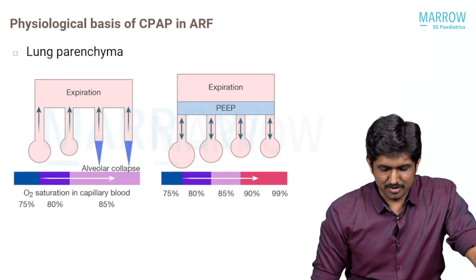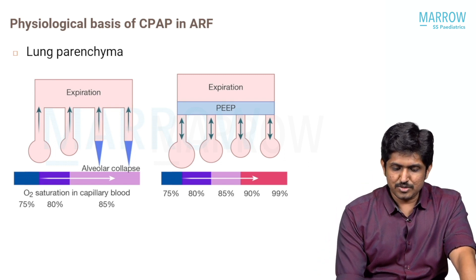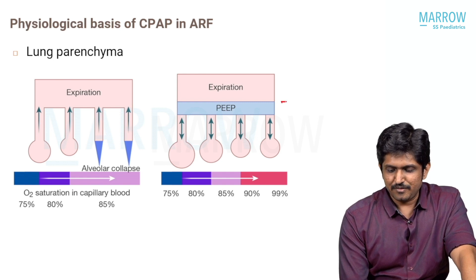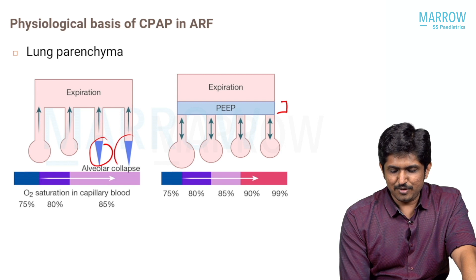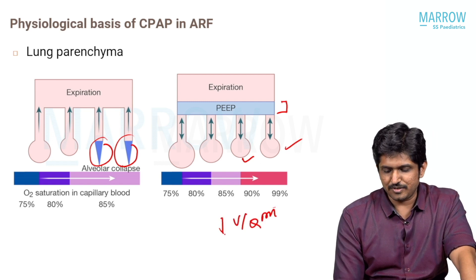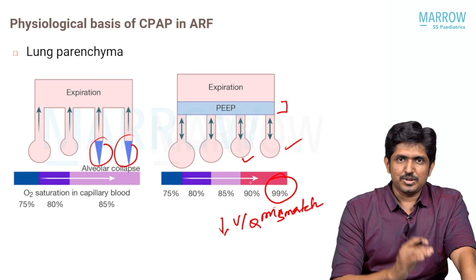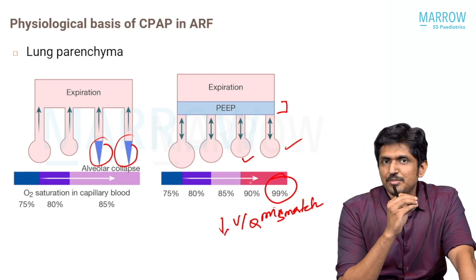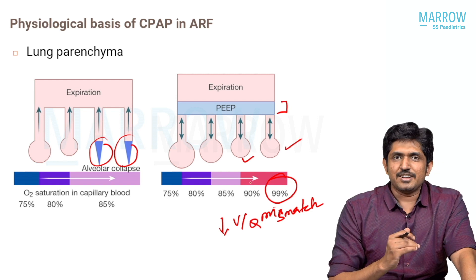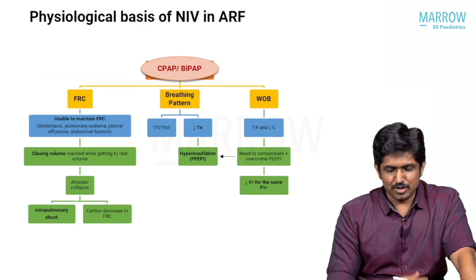What does HFNC do to the lung parenchyma? Unlike NIV CPAP and NIV BiPAP, which deliver alveolar pressure via PEEP during expiration to open collapsed alveoli, HFNC decreases VQ mismatch and improves oxygenation. It decreases the work of breathing by splinting both the upper and lower airway, reduces time to expiration, prevents air trapping, allows smooth volume exchange, and helps open collapsed alveoli in the lung parenchyma when PEEP effect is generated.